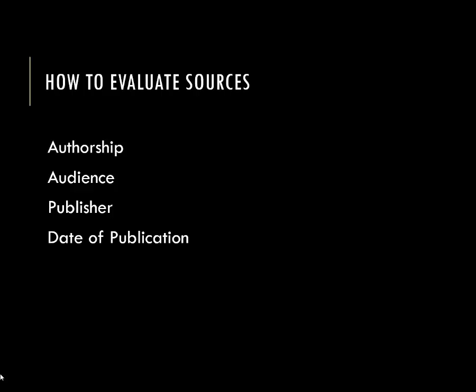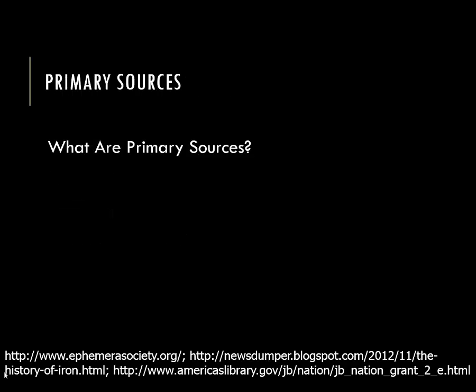Primary sources are sources that are produced by people who experienced the event — this is why dates of publication are important. Upton Sinclair's The Jungle was published in 1906. His book can give us insight into the problems of immigrants in the Gilded Age and Progressive Era, the hazards of factories, and the rise of socialism prior to World War One. By looking at the other categories for assessing sources, we can refine our understanding of the source even better.